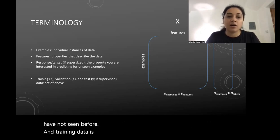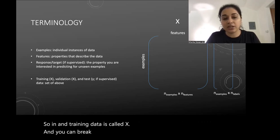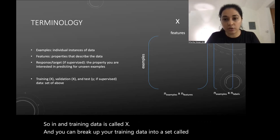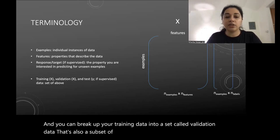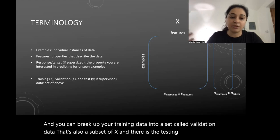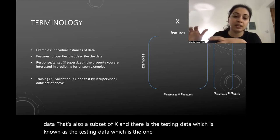Training data is called X, and you can break up your training data into a 'validation' set that is also a subset of X. There is also 'testing data,' which is the held-out set used to evaluate your model on unseen examples.